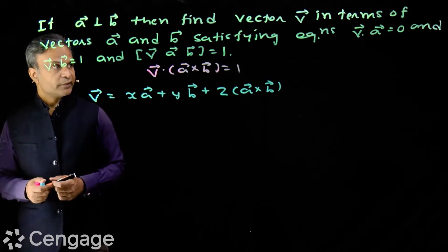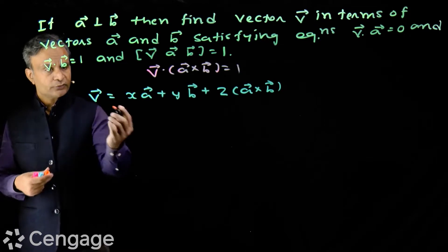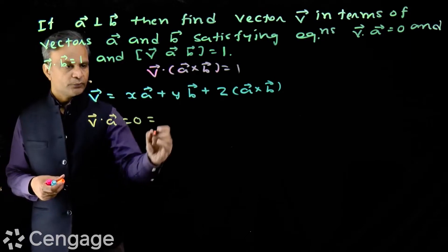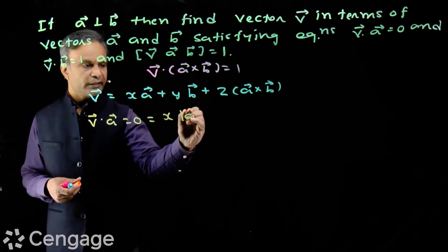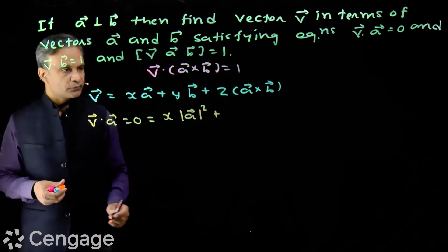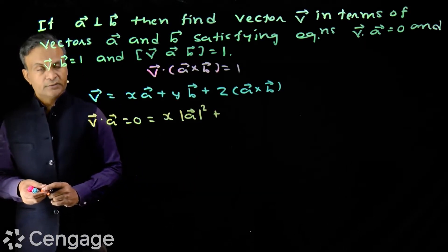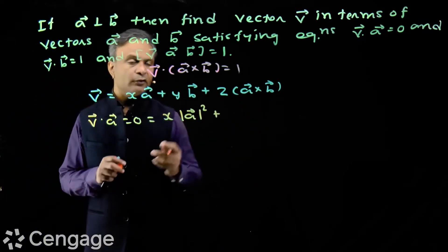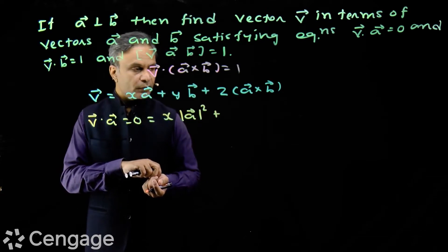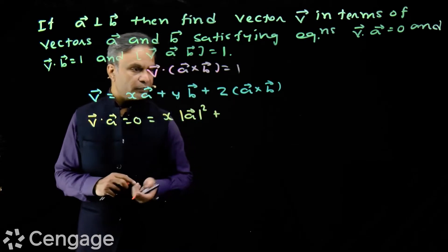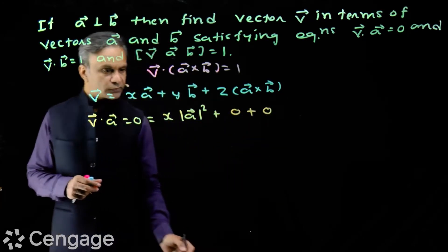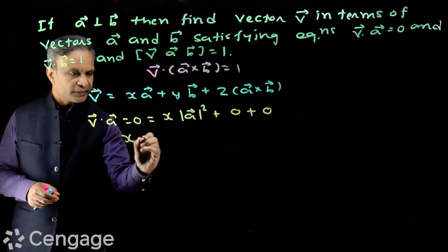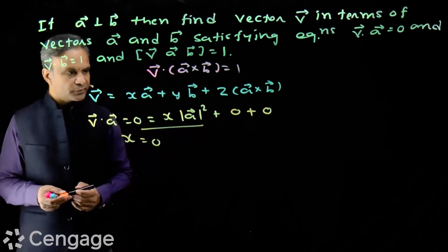We can use the given equations. For v dot a equal to zero, we take the dot product with vector a. We get v dot a, which is actually zero, equal to x multiplied by a dot a — which is the square of modulus of a — plus y into a dot b, which is zero because a is perpendicular to b, plus z into a dot (a cross b), which is also zero because a cross b is perpendicular to vector a. From this we get the value of x: x equals zero.